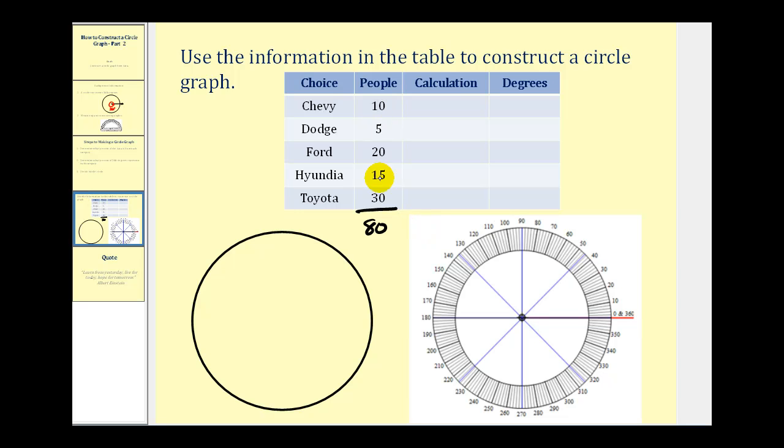So 10 out of 80 prefer Chevys. So what we're going to do is find 10 eightieths of 360 degrees. Now we could simplify the fraction, but we're going to go ahead and use the calculator for these calculations anyway. So we want 10 eightieths of 360 degrees.